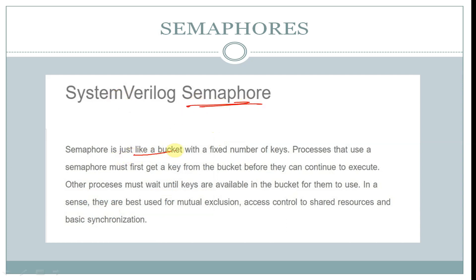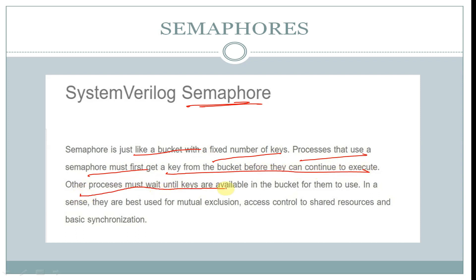A semaphore is just like a bucket with a fixed number of keys. Processes that use a semaphore must first get a key from the bucket before they can continue to execute. Other processes must wait until keys are available in the bucket. In essence, semaphores are best used for mutual exclusion, access control to shared resources, and basic synchronization.